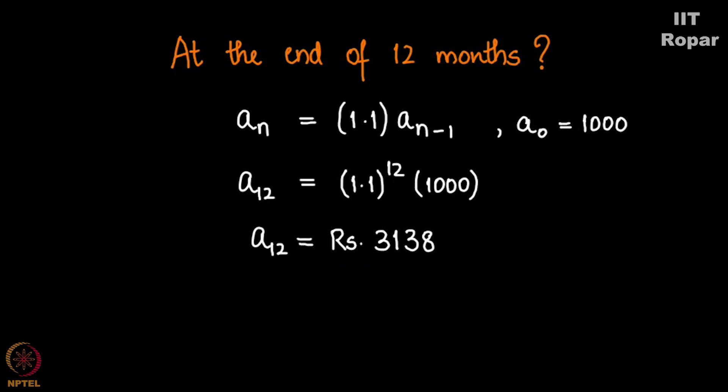3138 rupees is what you will be getting at the end of one year if you keep compounding it every month by 10%, it's a lot more than thrice the money that you invested in. So don't worry much about compound interest and your school days where you solved a lot of problems, the idea here is to get motivated to think on the lines of recurrence relation.